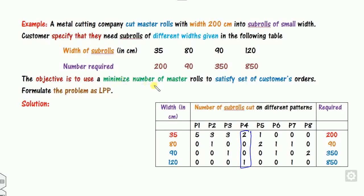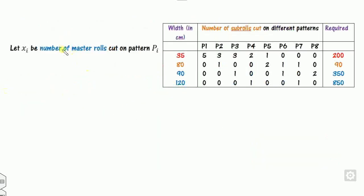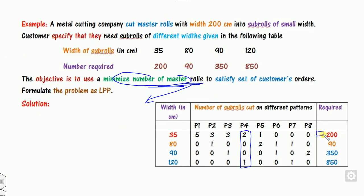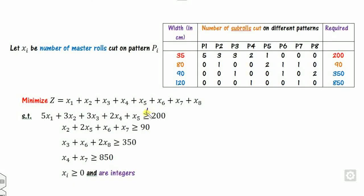The objective function here is to minimize X1 + X2 + ... + X8 (total number of master rolls). The constraints are written with a ≥ sign (e.g., 5X1 + 3X2 + 3X3 + ... ≥ 200) because the statement says 'at least' the required number of pieces must satisfy the customer order. All variables are integers.